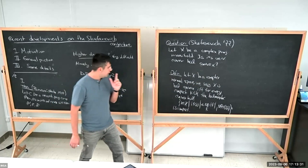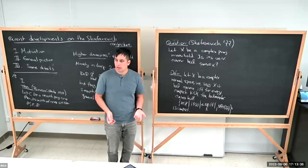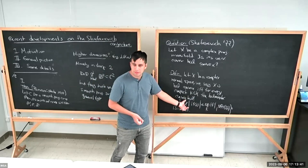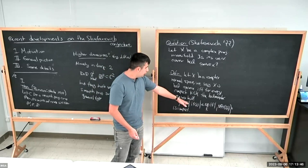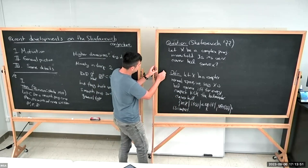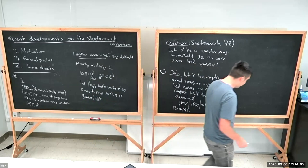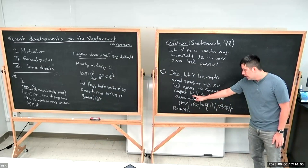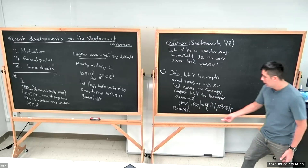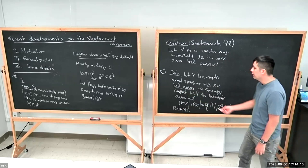If you have never seen a convex hull before it may seem strange, but this is mimicking the linear convex hull. When you have the convex hull of some points, you take a convex subset containing all of them. Here we use holomorphic functions to define an analogous notion: we want starting from a compact to obtain something compact.